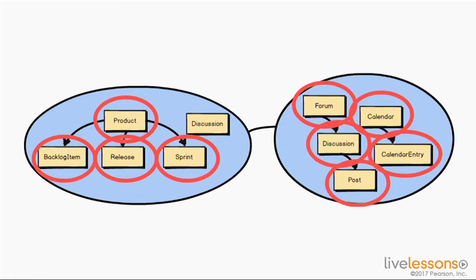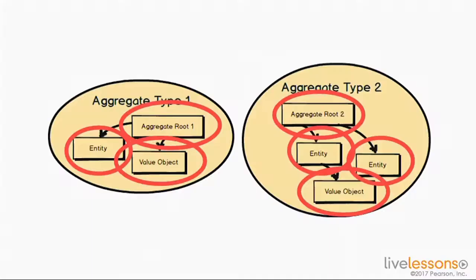As you can see from this diagram, there are several concepts that live inside each bounded context: the product, the backlog item, the release, and sprint in the agile project management context; and the forum, discussion, post, and the calendar and calendar entry. These are the aggregates. Notice that discussion is not considered an aggregate — it's an individual value object. We won't be focusing on value objects, but we are going to take a deep dive into aggregates and why they are used.